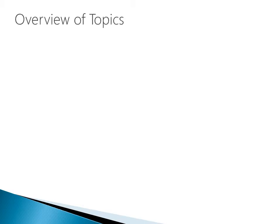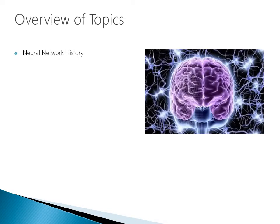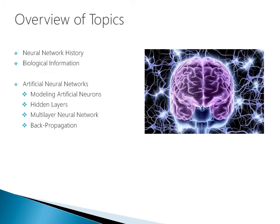The overview of topics which we'll get into today will include a brief history of neural networks, we'll talk about the biological information processes. To understand really how these machine learning techniques are performing, we have to understand a little bit about how the brain functions. Then we'll jump into the topics of artificial neural networks themselves — modeling artificial neurons, the hidden layers of an artificial neural network, then multi-layer neural networks, and then back propagation.